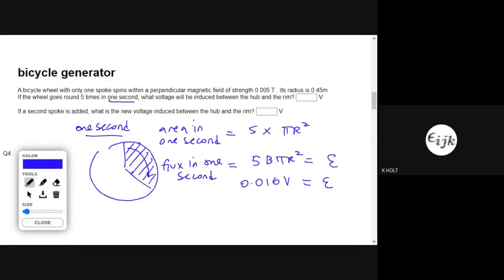There's an EMF between one end of the spoke and the outside of the rim, but adding a second spoke is not going to double that EMF. It's simply a sort of... it's like putting two batteries in parallel.